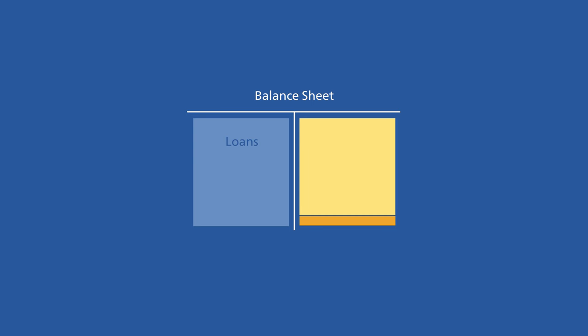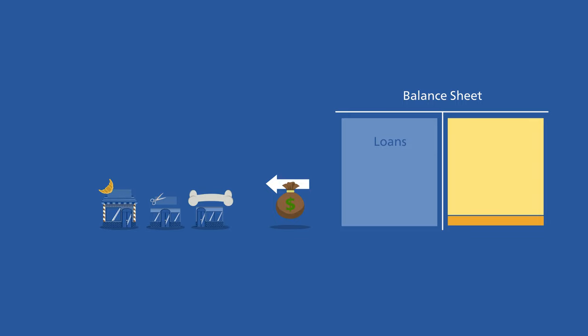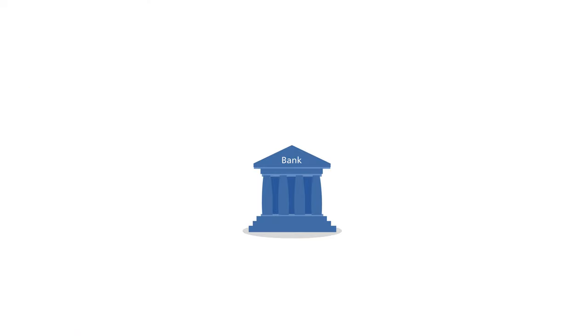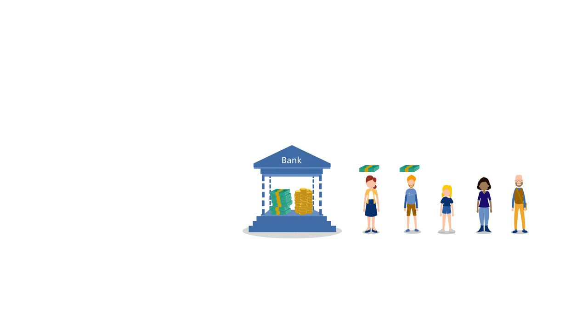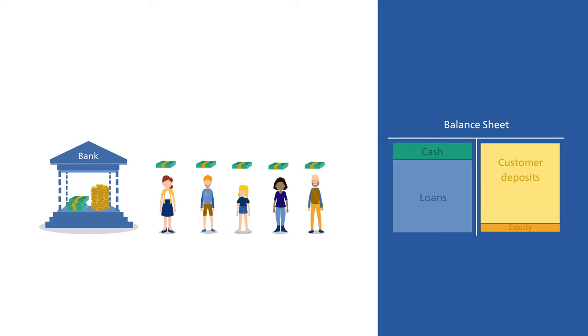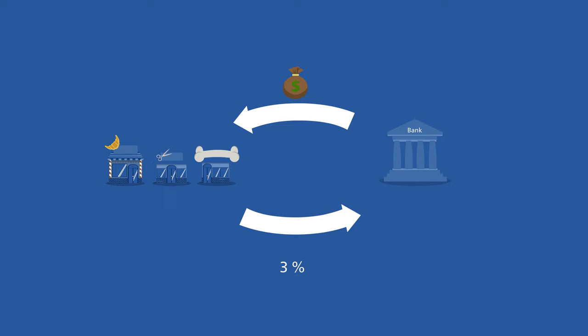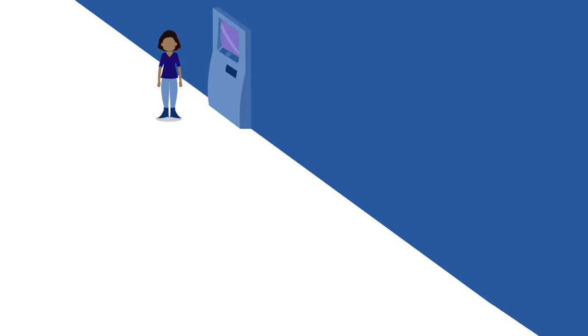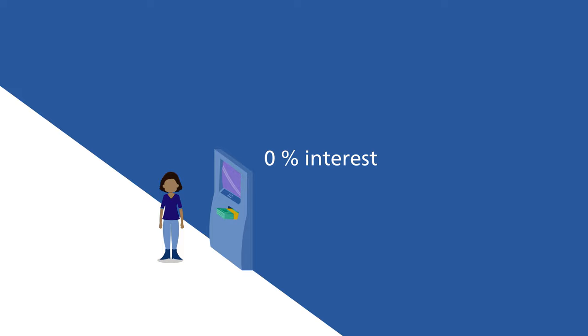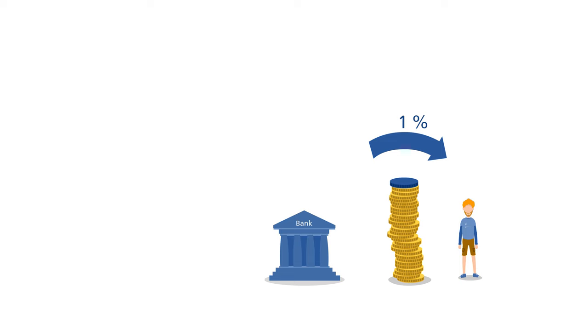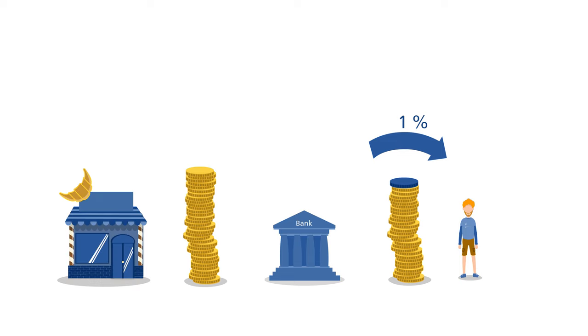Were a bank not to lend money, it would operate purely as a safe — it would put your money in a safety deposit and that's where it would stay. Instead, the bank uses the money deposited as a basis for loans, for example to property owners or to individual companies. A bank must also always be in a position to pay out cash to its customers, which is why it must keep a certain amount of cash on hand. Usually a bank will keep this amount of cash as low as possible, because by lending out money the bank earns from the interest charged, whereas it does not earn any interest with cash.